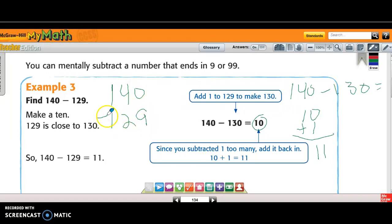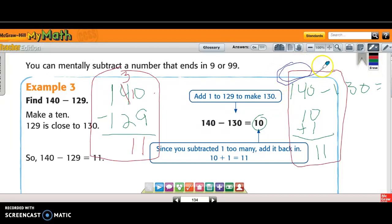0 minus 9 can't do that. I borrow from the 4, that makes it a 3. The one that I borrow goes next door, instead of 0, I get 10. 10 minus 9 is 1, 3 minus 2 is 1, and then 1 minus 1 is 0. So I could have done it this way, or I could have done it this way as well. So if I do it this way, where I make a 10 out of a number that ends in 9 or 99, what strategy am I using? Compensation, yes.